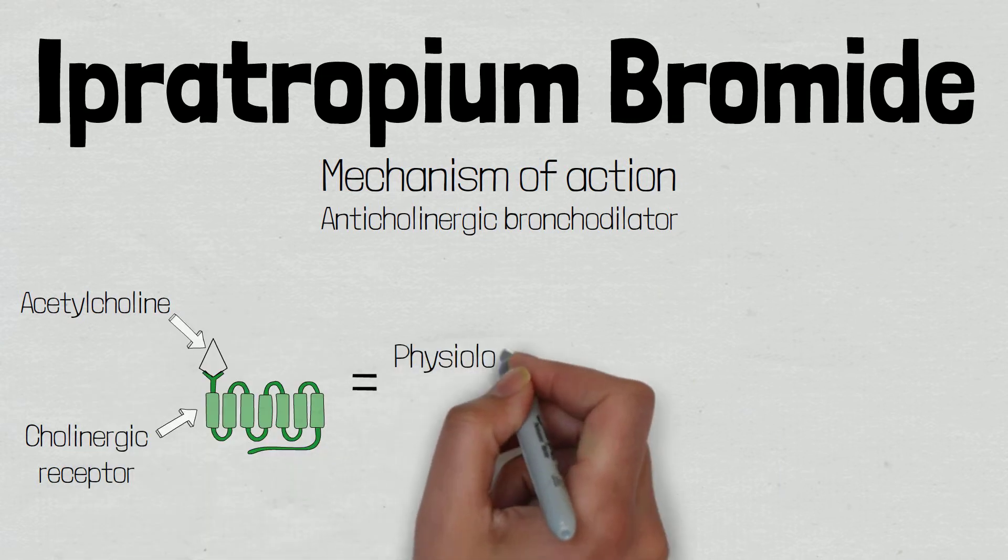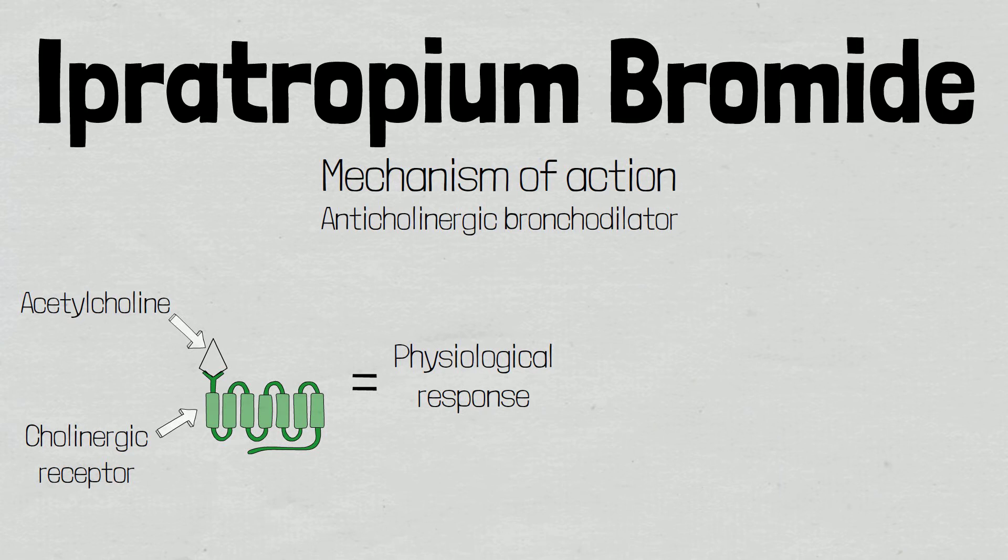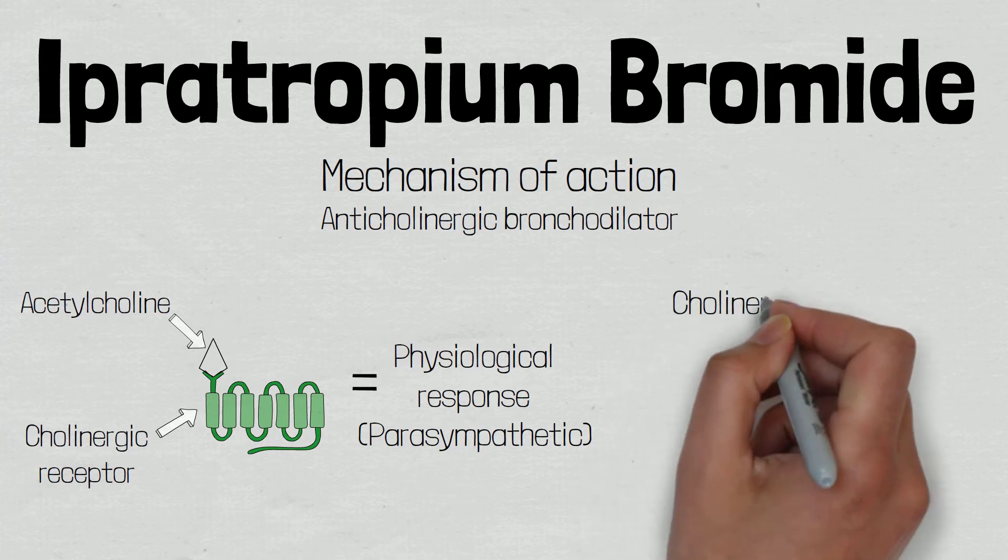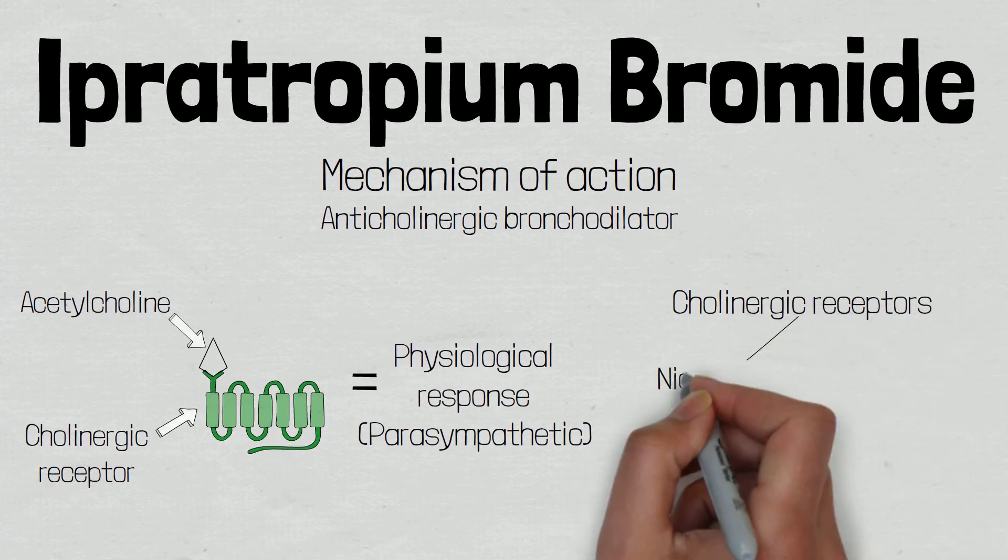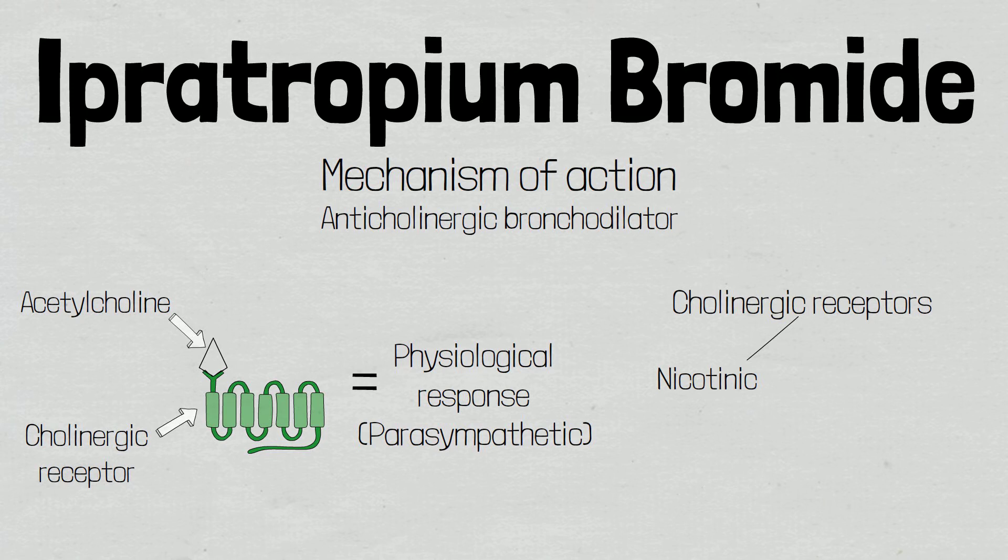Cholinergic receptors are the target site for multiple treatments in various medical fields, such as cardiology and respiratory medicine. There are two types of cholinergic receptors, called nicotinic and muscarinic, named after the drugs that work on them.